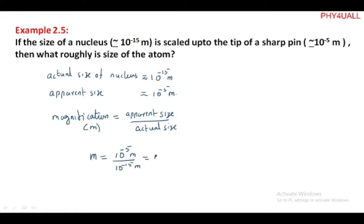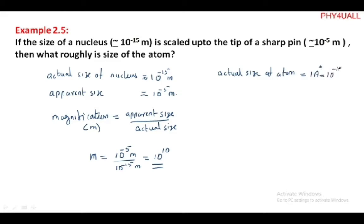So the magnification we get is 10 to the power 10. Now, the question asks: what roughly is the size of the atom? The actual size of the atom, which we already know, is approximately 1 angstrom, that is equal to 10 to the power minus 10 meter, and this is scaled up by a factor of 10 to the power 10.